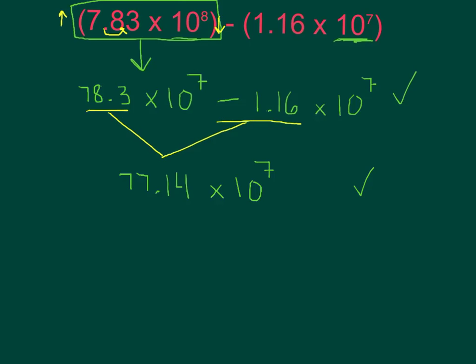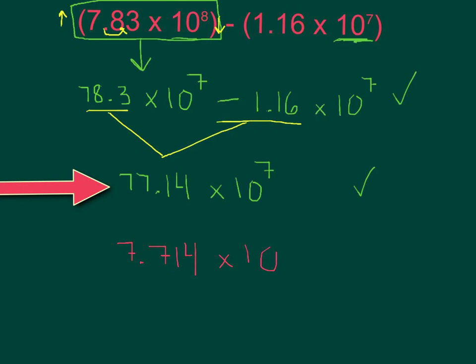We created like terms and subtracted. Now we have to change back to proper scientific notation, because our front number has to be between 1 and 10. So I rewrite this as 7.714 times 10. My coefficient decreased, so my exponent has to increase — it is going to be times 10 to the power of 8. So there is my final answer.